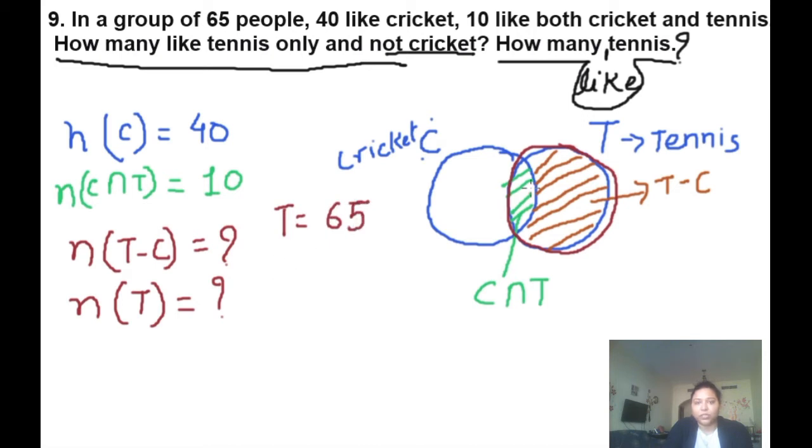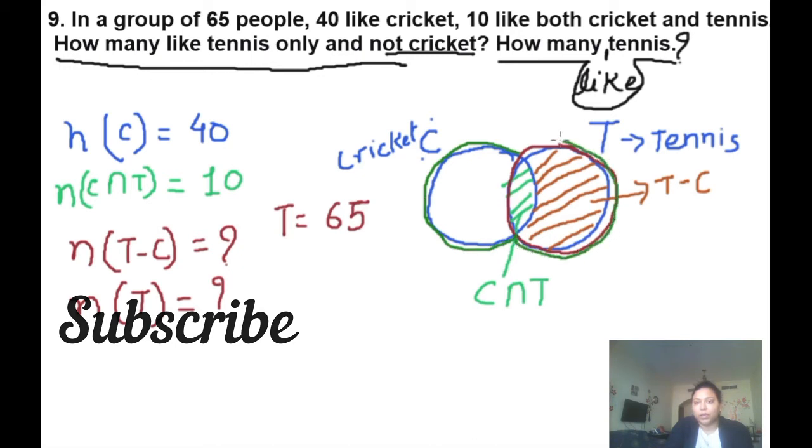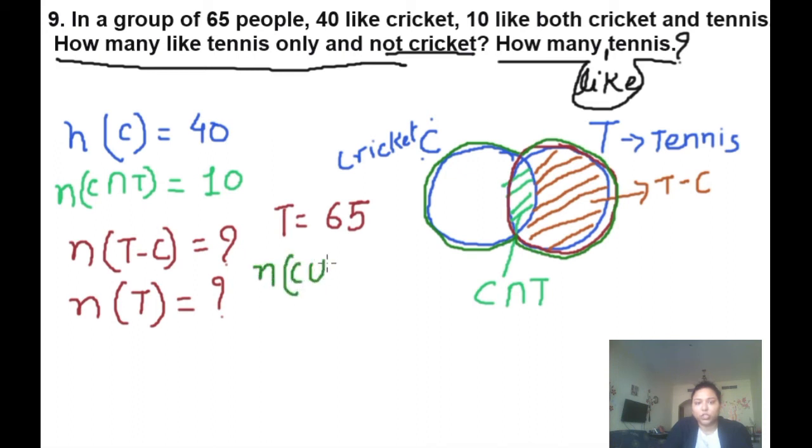So total number is 65. This is total. It means this total is called n(C union T).